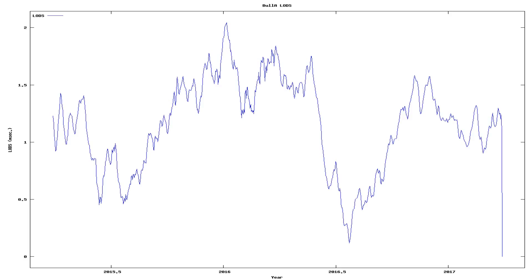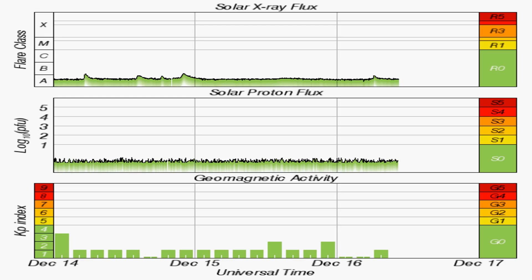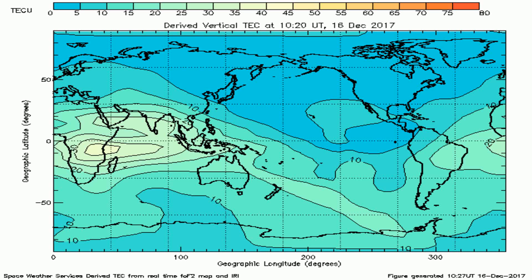Now we see changes in the speed of the rotation of the Earth, along with solar X-ray flux, solar proton flux, geomagnetic disturbances, and another graph of total electron content across the Earth.